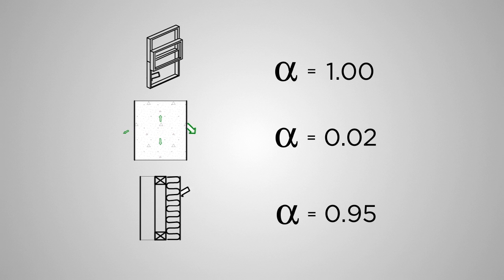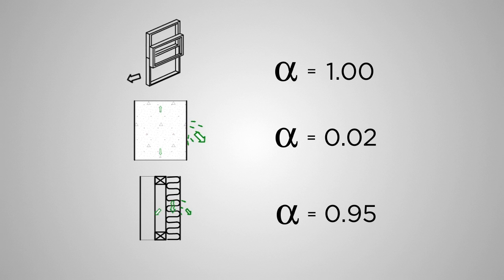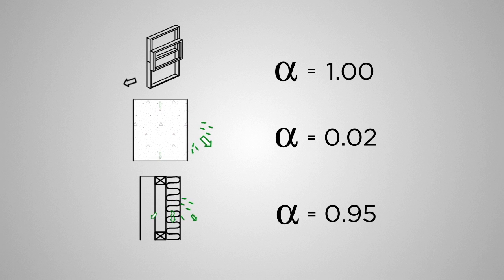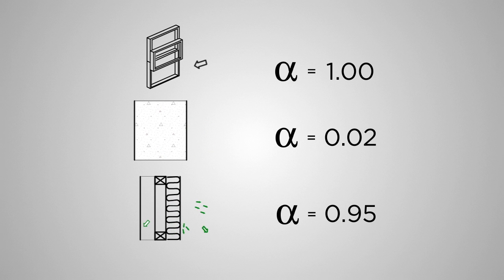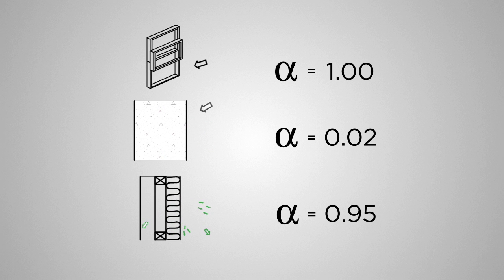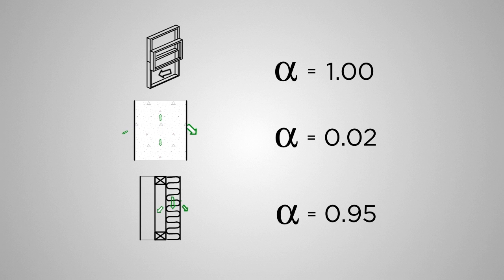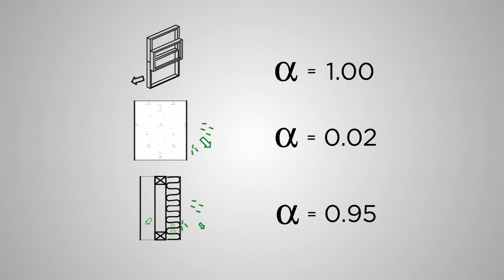Remember that the proportion that is transmitted, reflected, and absorbed varies across the frequency spectrum, so the numbers we've been using here are shortcuts. In reality, a material will have a different sound absorption coefficient value at each octave band.